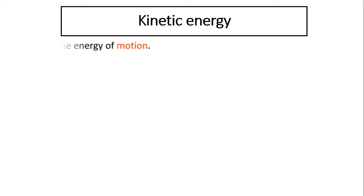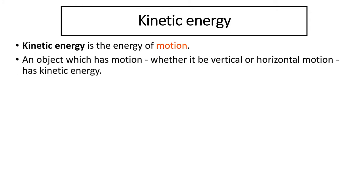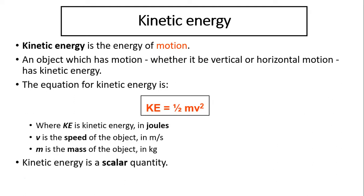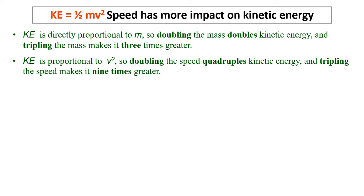Kinetic energy is the energy of motion. When something is moving, it has kinetic energy. An object which has motion — whether vertical, horizontal, or in a circle — has kinetic energy. The equation for kinetic energy is KE = ½mv². KE is kinetic energy in joules, m is mass in kilograms, and v is speed in meters per second. Kinetic energy is a scalar quantity — it has no direction.